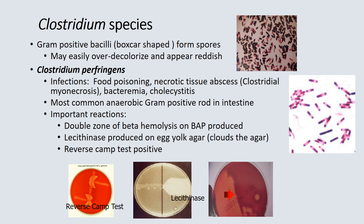Clostridium species is a gram-positive bacilli that is boxcar shaped and looks much like Bacillus species. It may over-decolorize and appear reddish, so caution is needed on gram stains. It also forms spores, which appear as blank spots in the gram stain. The most common infection is from Clostridium perfringens, which can cause food poisoning, necrotic tissue abscess, bacteremia, and cholecystitis. It is the most common anaerobic gram-positive rod in the intestine. Three notable features: a double zone of beta-hemolysis on blood agar, lecithinase production clouding egg yolk agar, and a positive reaction on the reverse CAMP test.